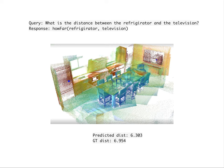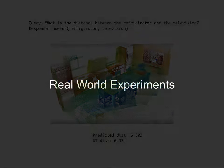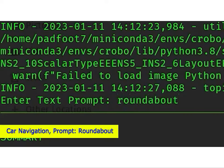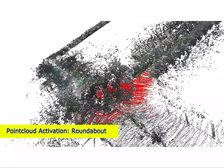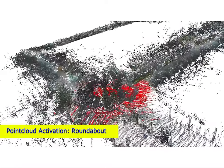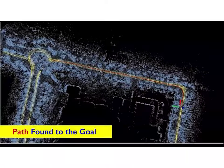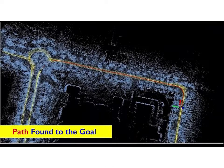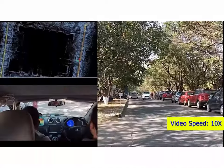We can also support geometric queries, such as asking about the distance between the refrigerator and television in this room. Let's move on to some real-world experiments. We evaluate Concept Fusion on two robotic systems. First, we present results on an autonomous driving platform. Our map can be used to find places via a natural language description. In this example, the car uses our map to locate, plan a path for, and autonomously drive to a nearby roundabout.